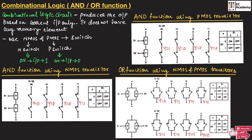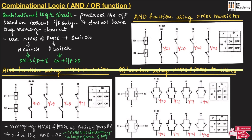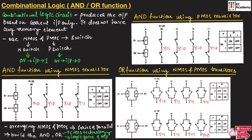From this we understand that by arranging NMOS and PMOS transistors in series and parallel, we can build the basic building blocks of digital logic — AND operation and OR operation. Similarly, we can design other digital logic circuits. These logic circuits are the foundation for CMOS technology used in modern VLSI design, where we can design logic gates and microprocessors. This concludes the topic of combinational logic for AND and OR functions. Hope you have understood the topic.